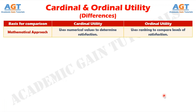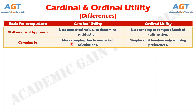Number 9: cardinal utility follows a mathematical approach where satisfaction is expressed numerically, whereas ordinal utility does not rely on numerical calculations but rather on ranking. And finally, difference number 10: cardinal utility is more complex as it requires precise calculations, whereas ordinal utility is simpler since it only requires ranking preferences.